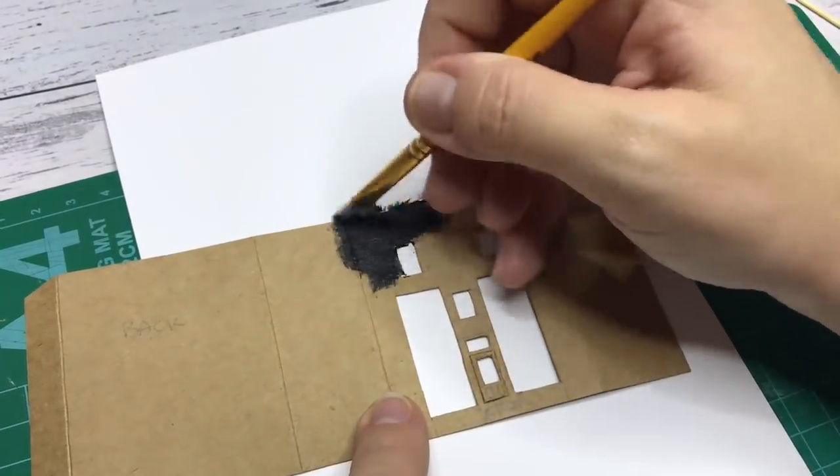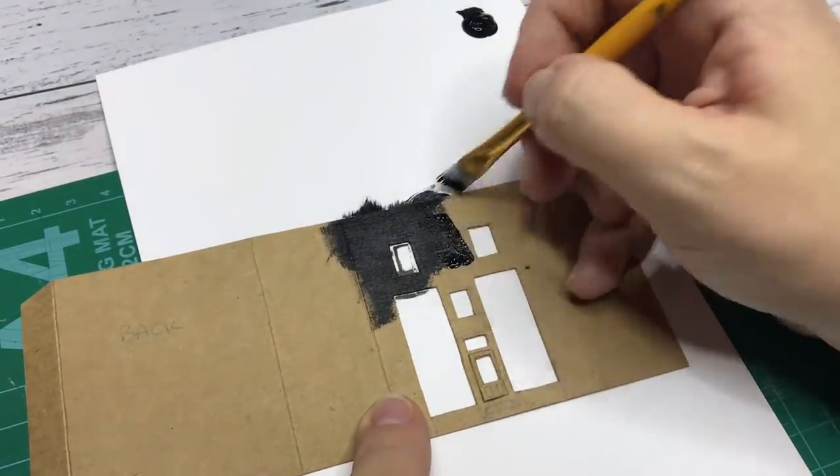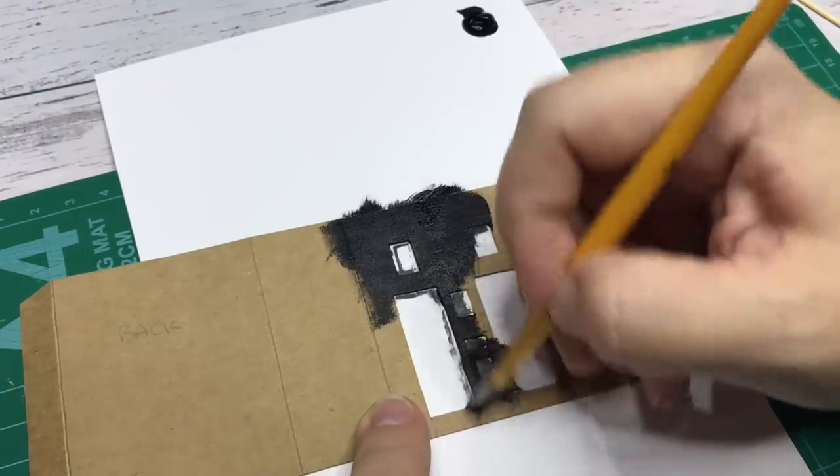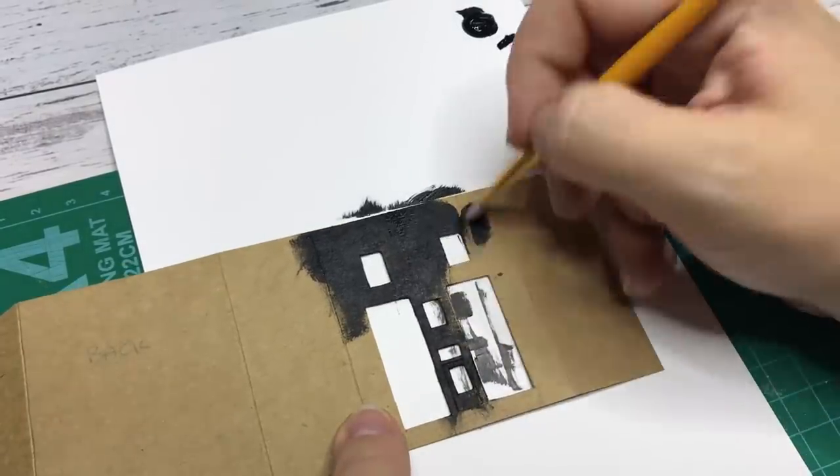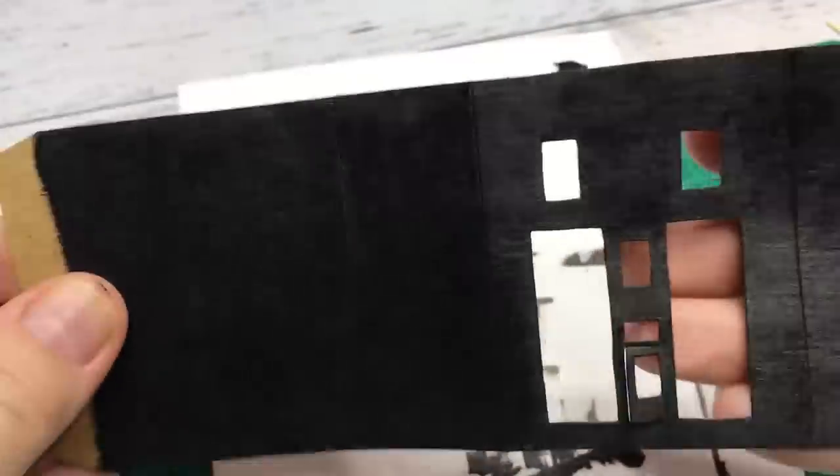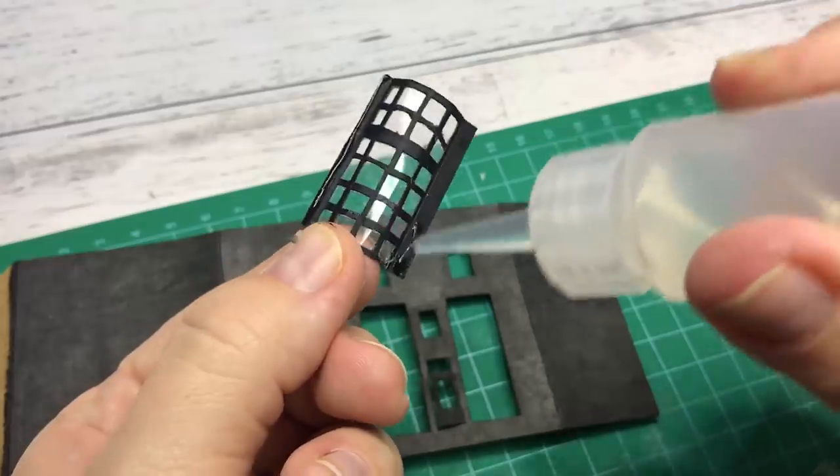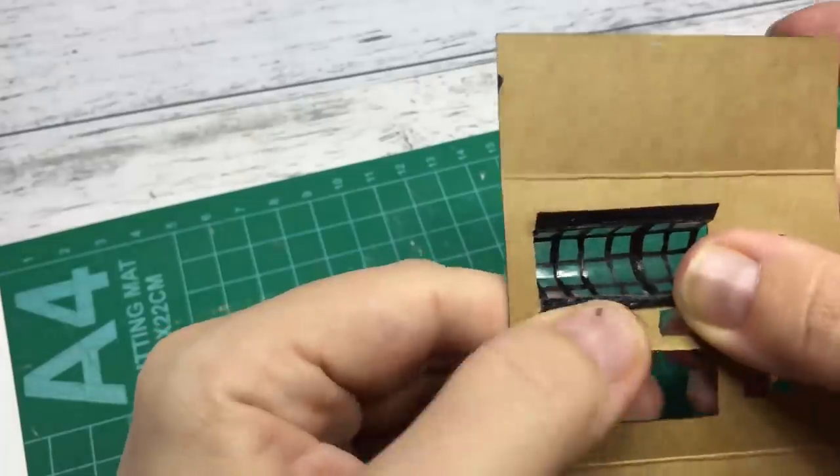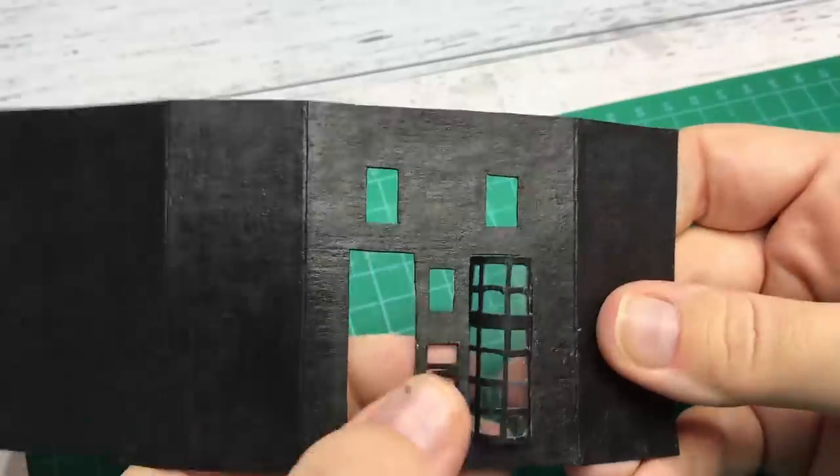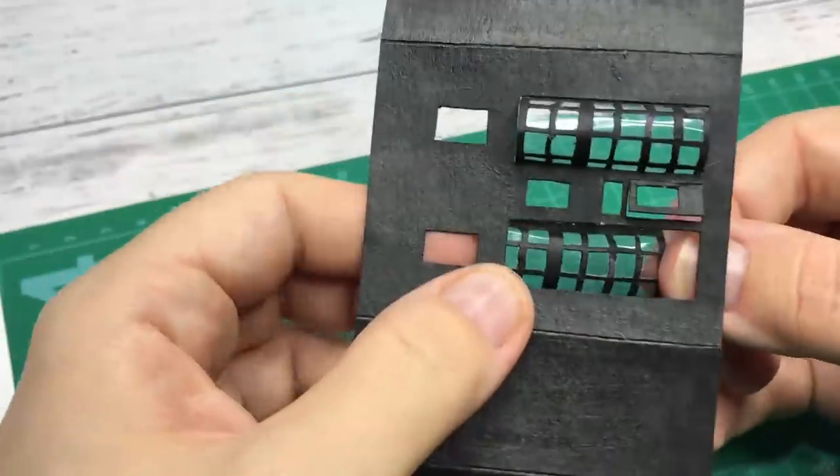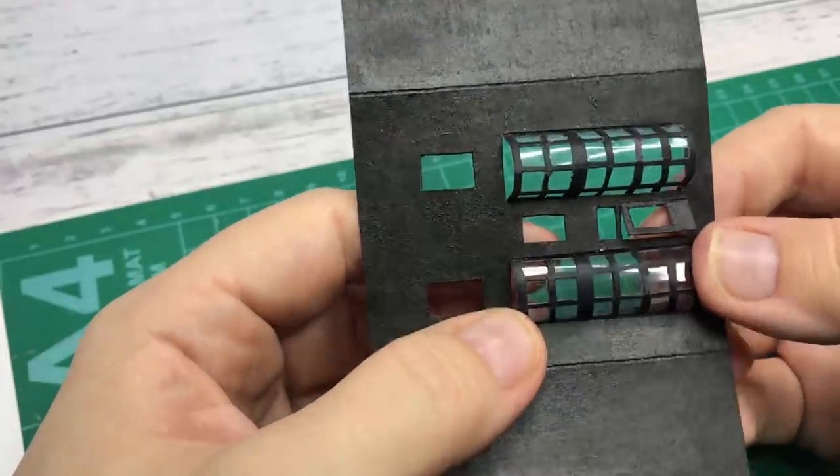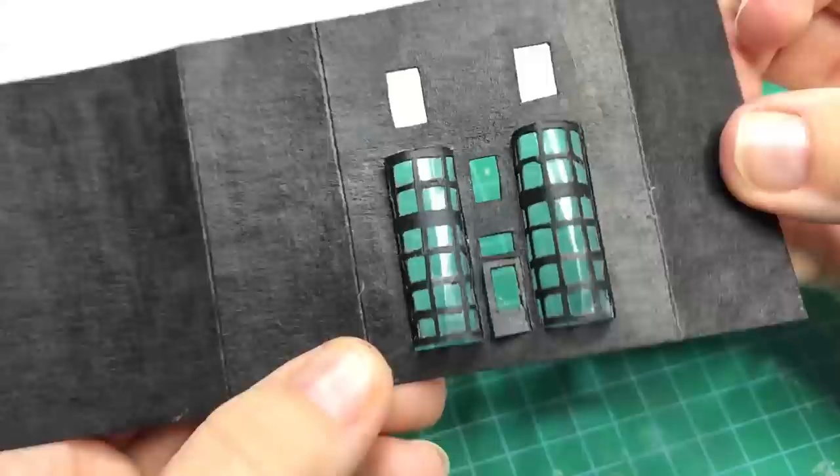Before I glue the windows into place I am painting the entire outside of the matchbox cover black with acrylic paint. I then glue the large windows into place and put acetate behind the smaller windows. To make these windows part of the storefront I paint the window frames with acrylic paint. You can also do this for the larger windows, however this will give a different effect.